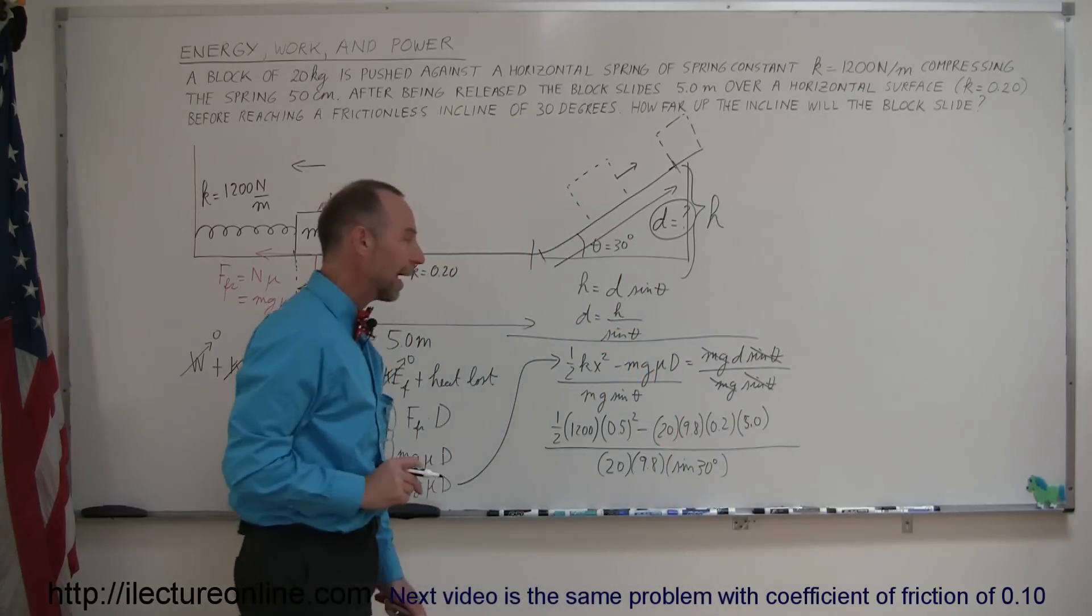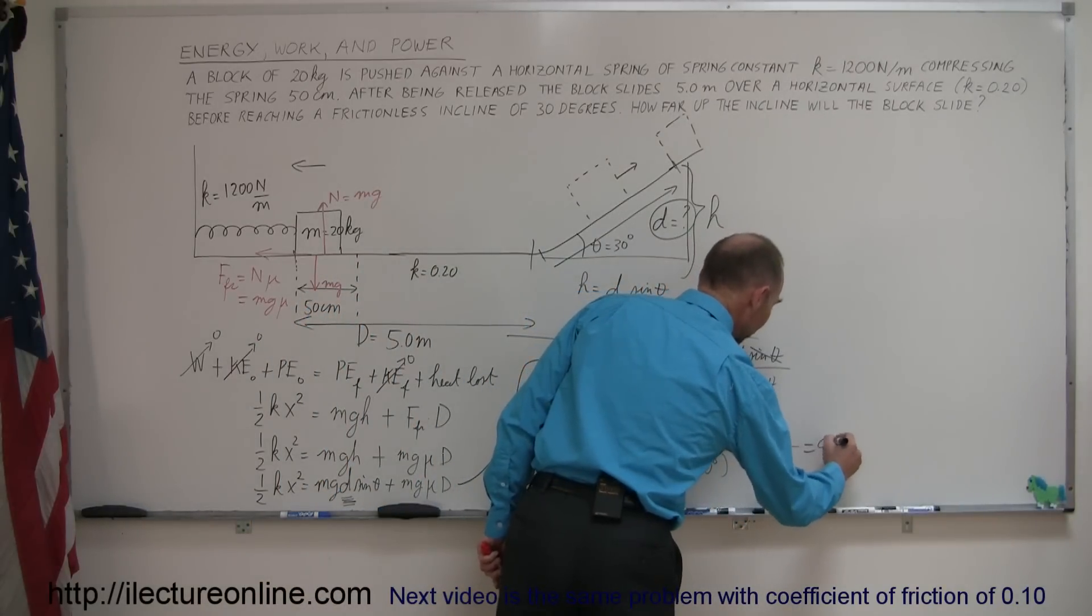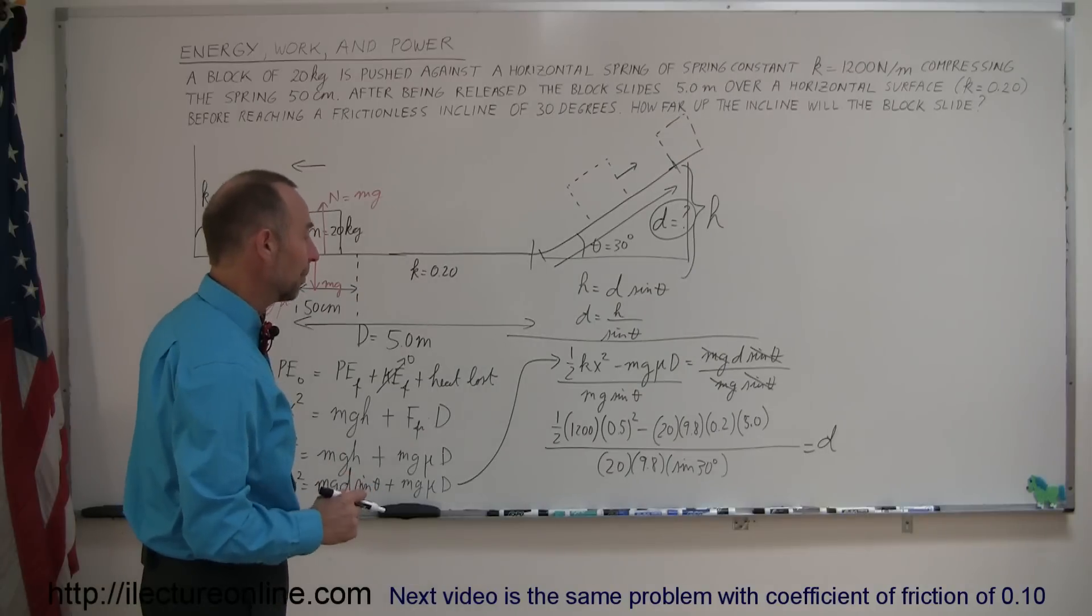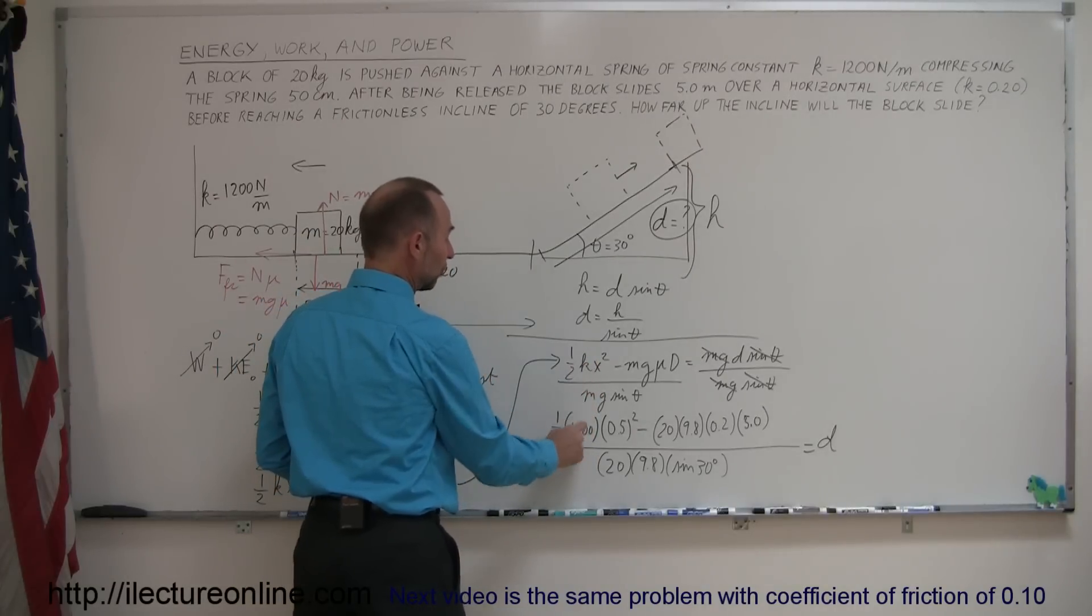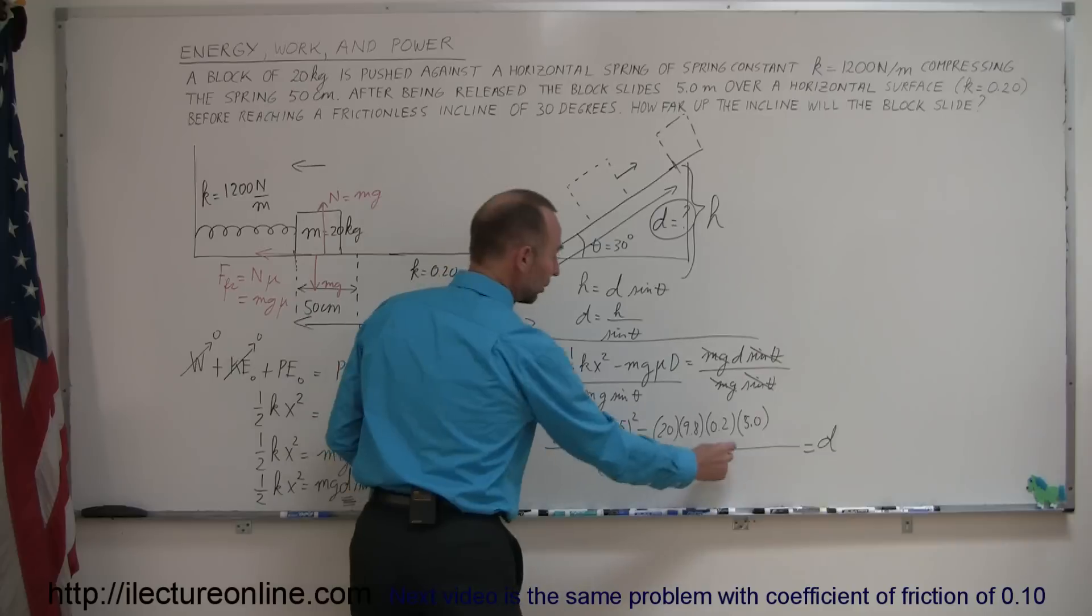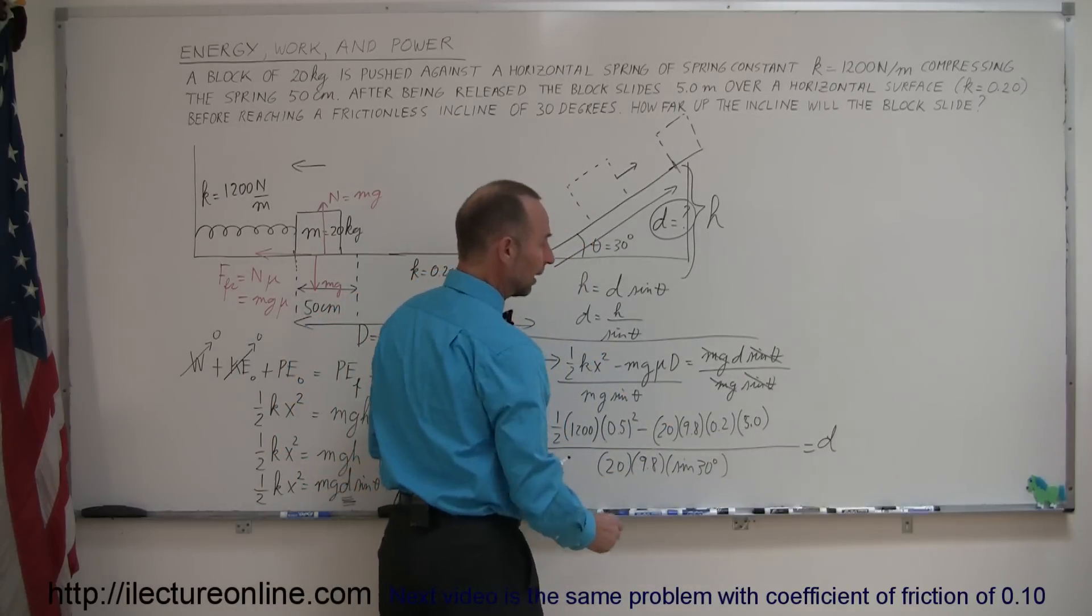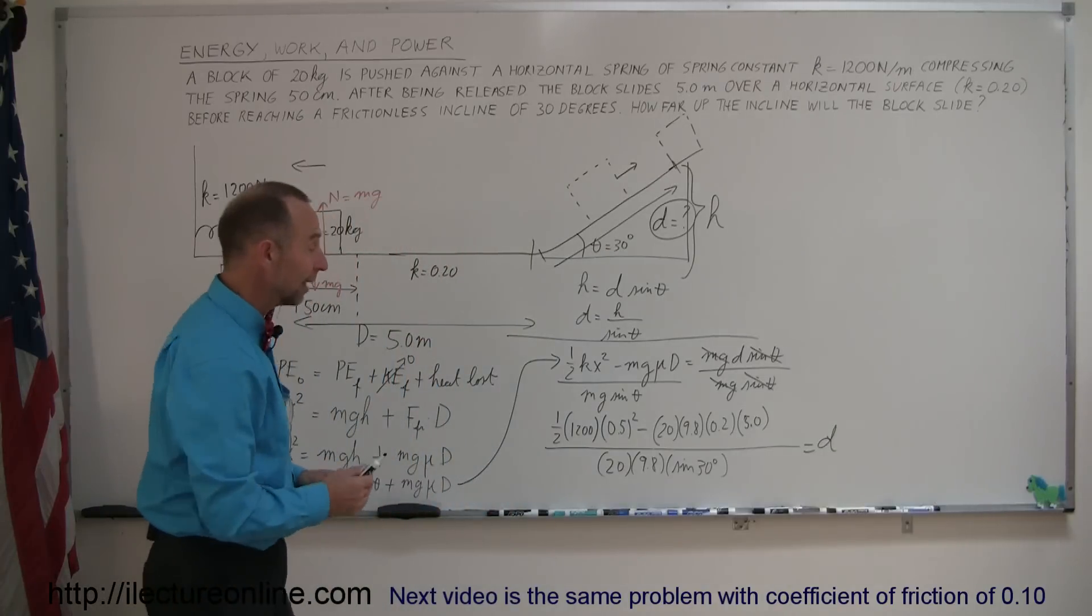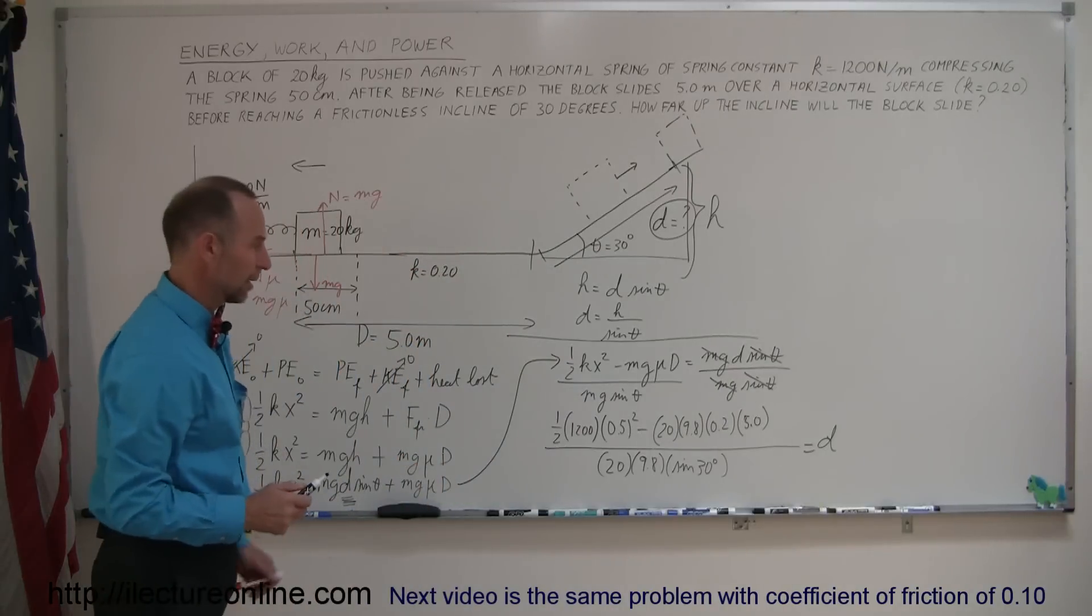Now notice, I did not put in any units here. I did that in the interest of space. I'm kind of running out of space here on my board. But remember, if we use standard units, newtons per meter, meters, kilograms, meters per second squared, and mu is unitless, and the sine of 30 degrees is unitless, then we should end up with the distance in meters.